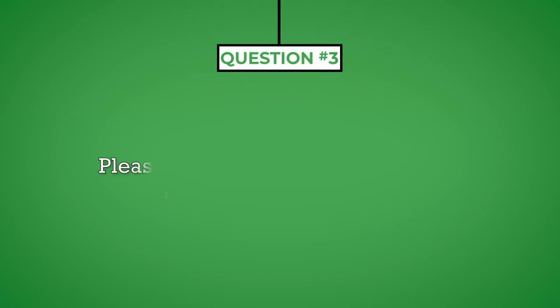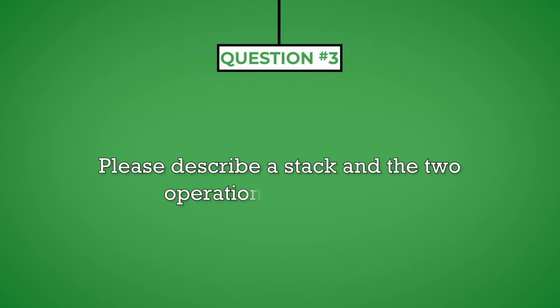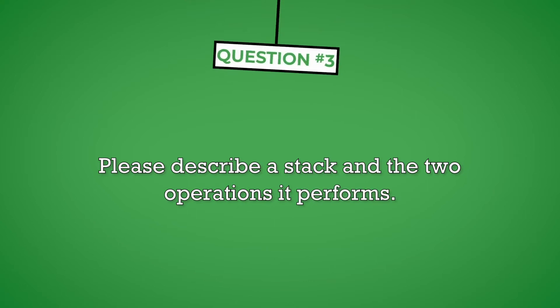Question number three: please describe a stack and the two operations it performs. When an interviewer asks you to describe something, you should immediately identify the question as being technical. When responding to a technical question, you first define the term or concept and then describe how it is used in the work you are performing. If the interviewer asks a follow-up question, they are expressing a strong interest in this topic, indicating it is important to their operations. This is a signal for you to expand on your answer and give them more details than you normally would.